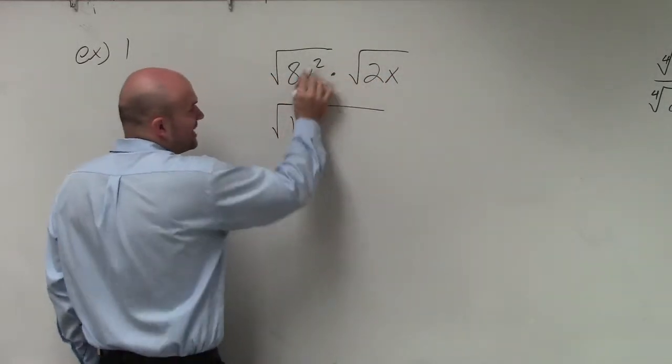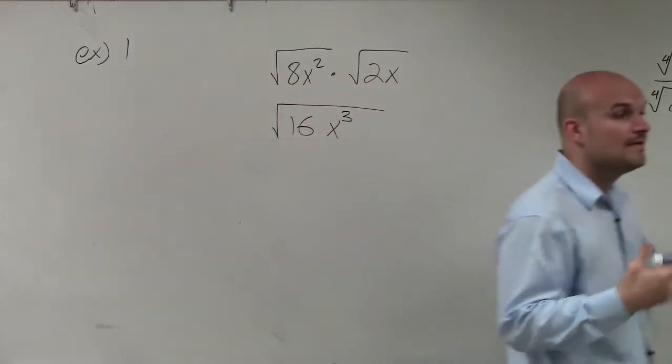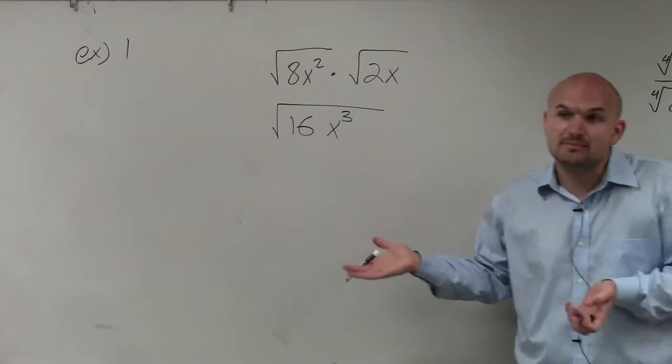8 times 2 is going to be 16. x squared times x is going to be x to the 2 plus 1, which would be x cubed. Now we can simply go ahead and simplify them.